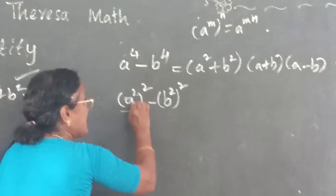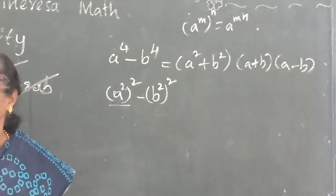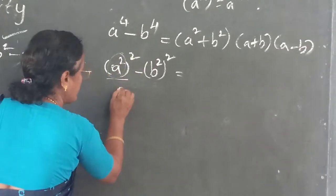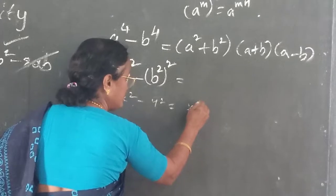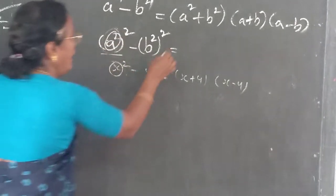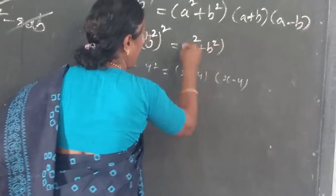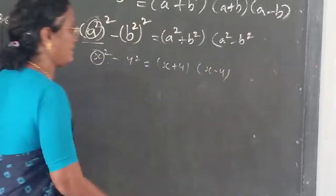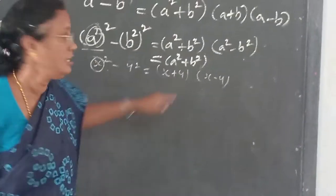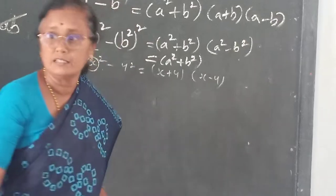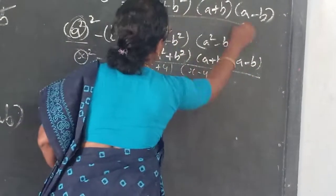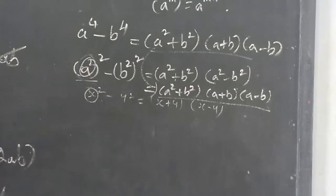This is in the form x² - y² = (x + y)(x - y). In the place of x we have a², so: (a² + b²)(a² - b²). Here a² + b² stays as is, but a² - b² can be further factored as (a + b)(a - b). So the final answer is (a² + b²)(a + b)(a - b).